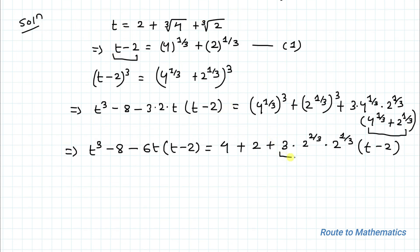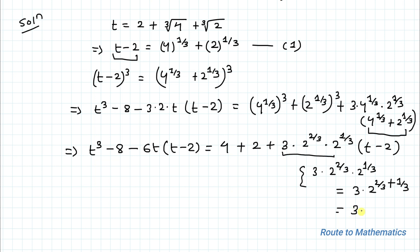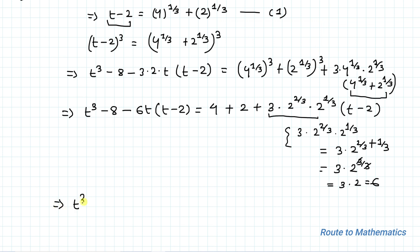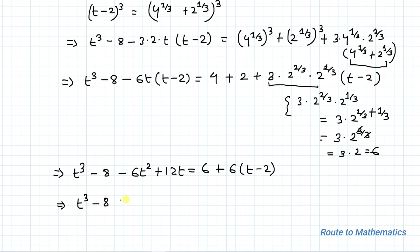We have 3 times 2 to the power 2/3 plus 1/3 — since the bases are the same, the powers can be added — giving 2 to the power 3/3, and the 3s cancel, leaving 3 times 2, which is 6. So we can write t cubed minus 8 minus 6t squared plus 12t equals 6 plus 6 times (t minus 2). This implies t cubed minus 8 minus 6t squared plus 12t equals 6 plus 6t minus 12.